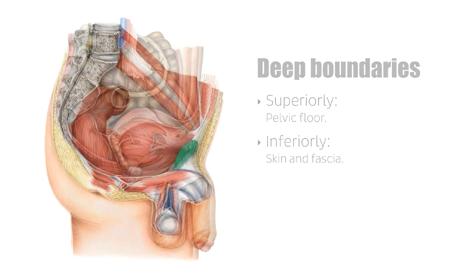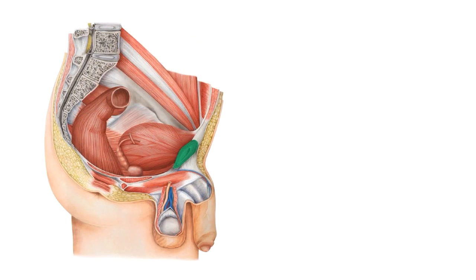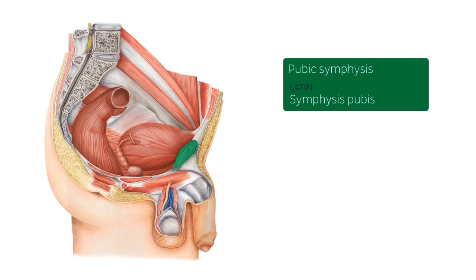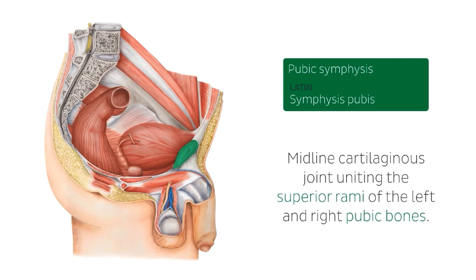We're going to start off with this structure that you see here. We've removed some of the fascia and some of the bones — cut a little bit more into the bone, removed some of the peritoneum, some of the fascia, and the pelvic bones — to highlight this structure here which is known as the pubic symphysis. The pubic symphysis is an important midline cartilaginous joint uniting the superior rami of the left and right pubic bones.